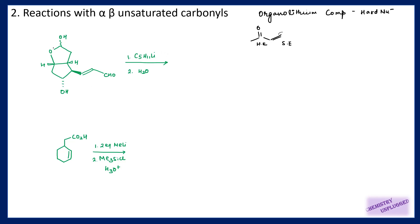So in this case, although we have a very complex structure, this organolithium compound will directly attack on this carbonyl carbon. We simply get OH attached here. Again, if we have a compound where the double bond is not in the alpha-beta position, there is no effect on the attack — our organolithium compound is going to attack on this carbonyl carbon only.